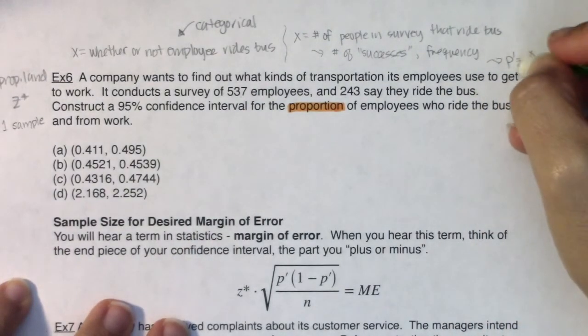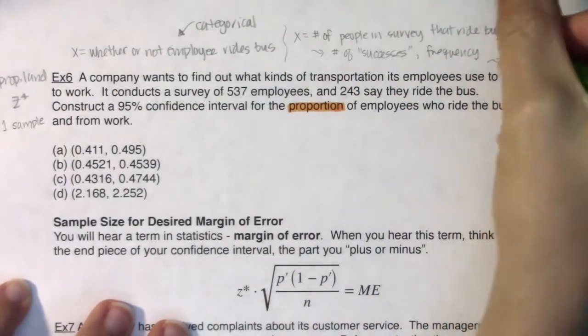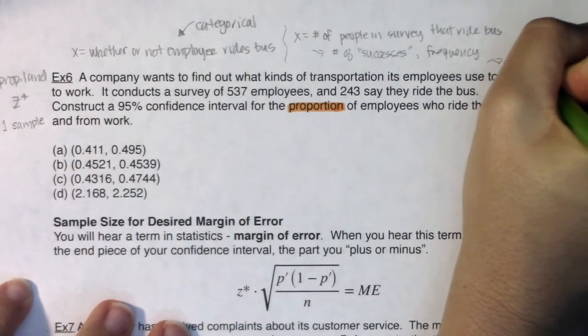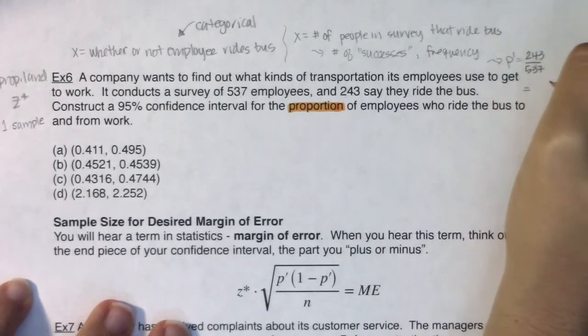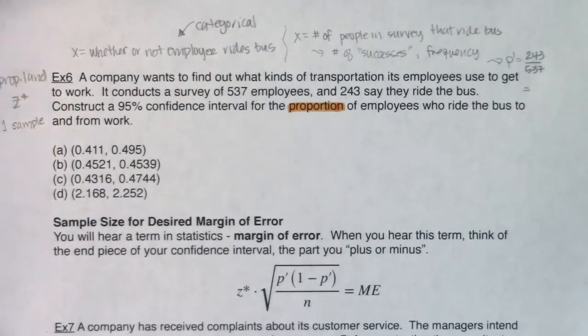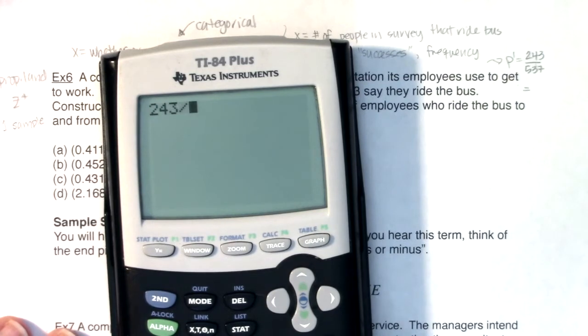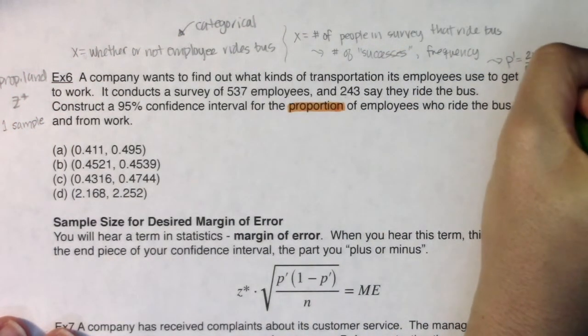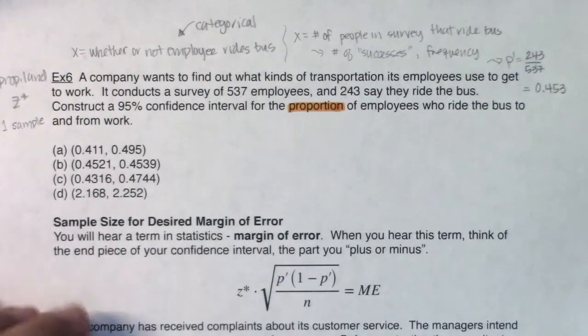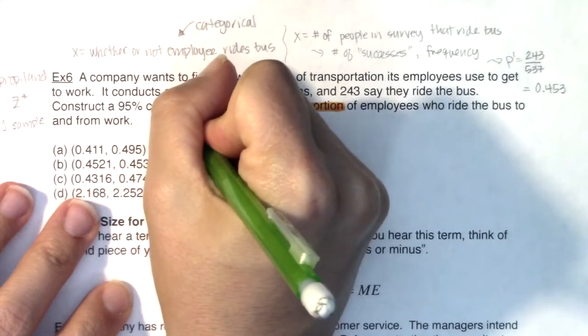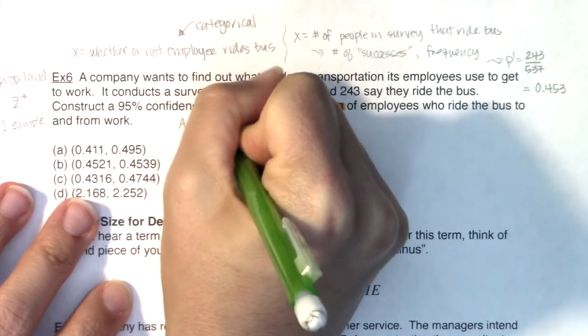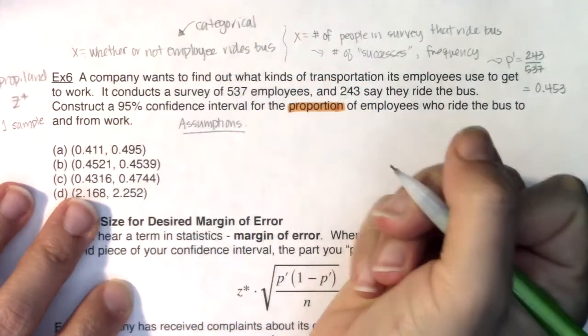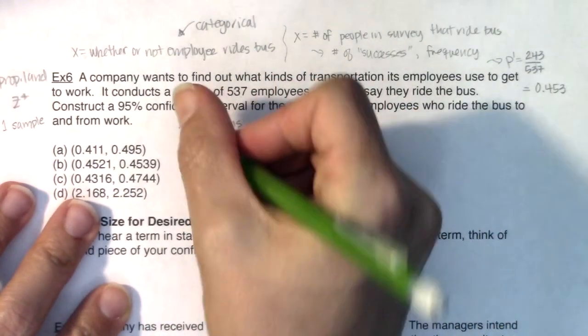Whether you define your variable initially categorically or turn it into a numerical variable, eventually you want to look at the sample proportion. We're going to have the number of successes over the sample size, and we're going to get a sample proportion. For this particular problem, our sample proportion we see is 243 successes out of 537 trials. So our sample proportion here, if I crunch that on my calculator, we are looking at 243 divided by 537, about a sample proportion of 45%. I'll go to three decimals, so 0.453.